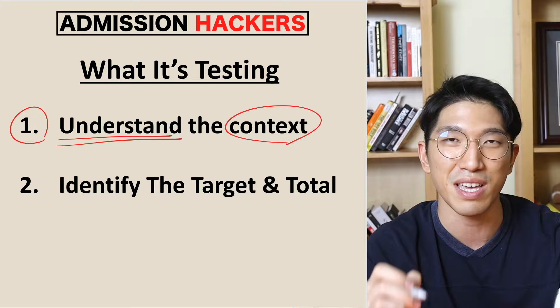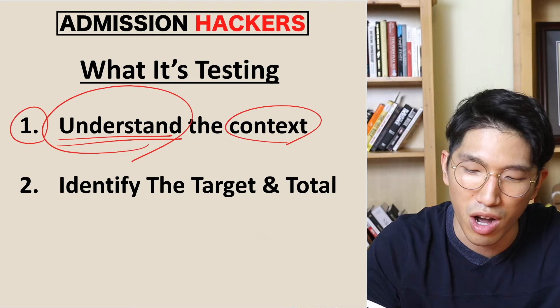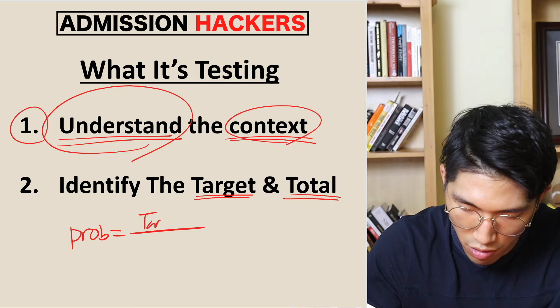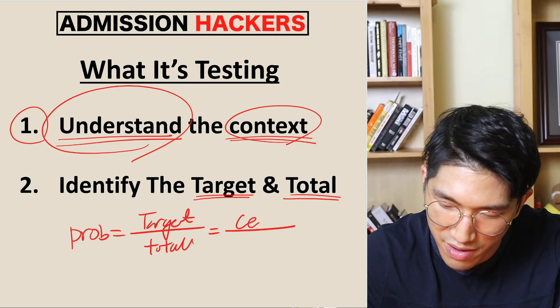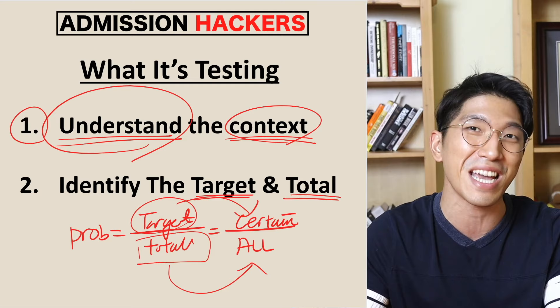How these questions are structured is that they give you a scenario and they're asking you to find the probability of some event happening. To find that probability, it's really important for you to understand exactly what is going on within the context. Probability in a nutshell is this: probability is literally just target over total. The total is going to be every single possible option out there, and your target is going to be what you want happening out of all of those options.